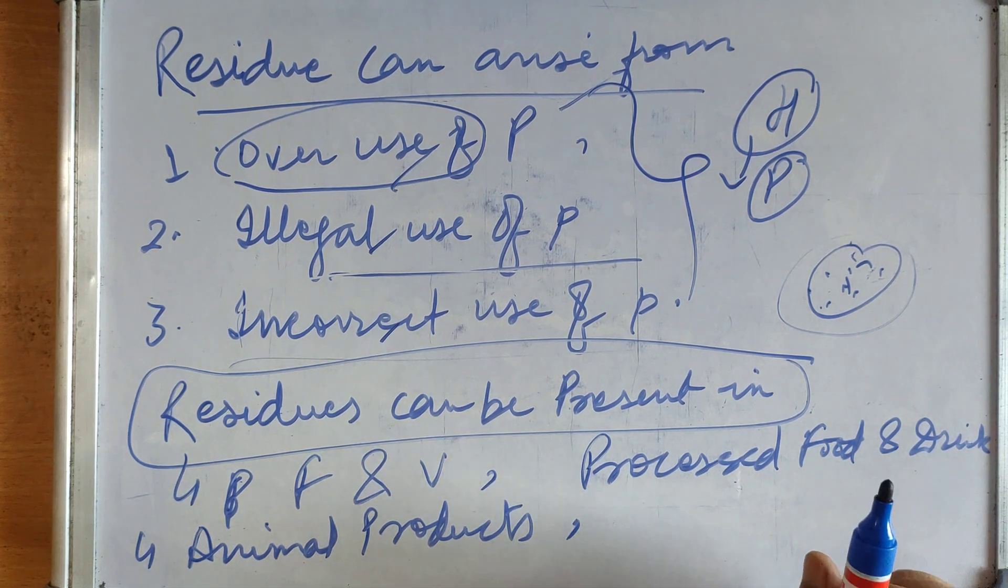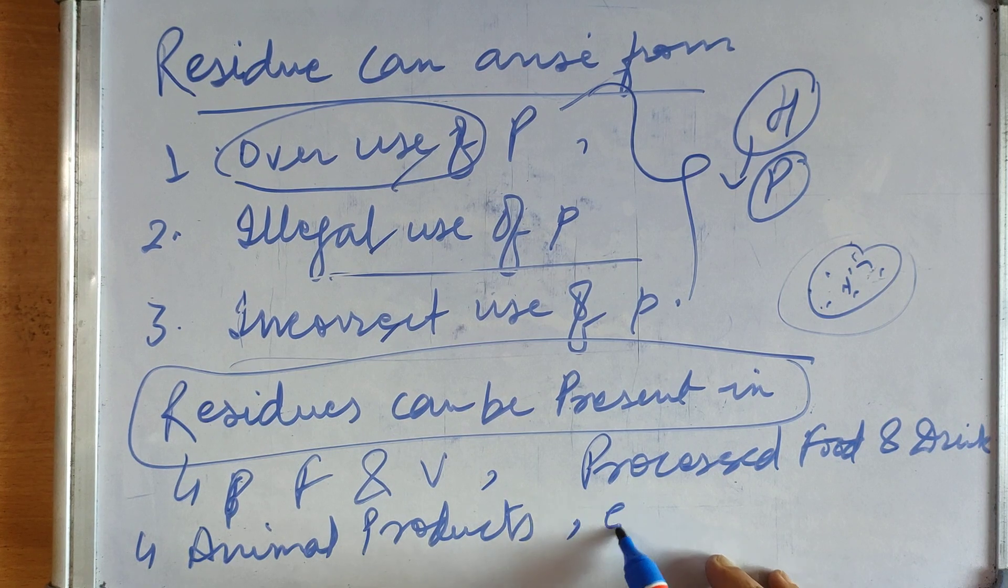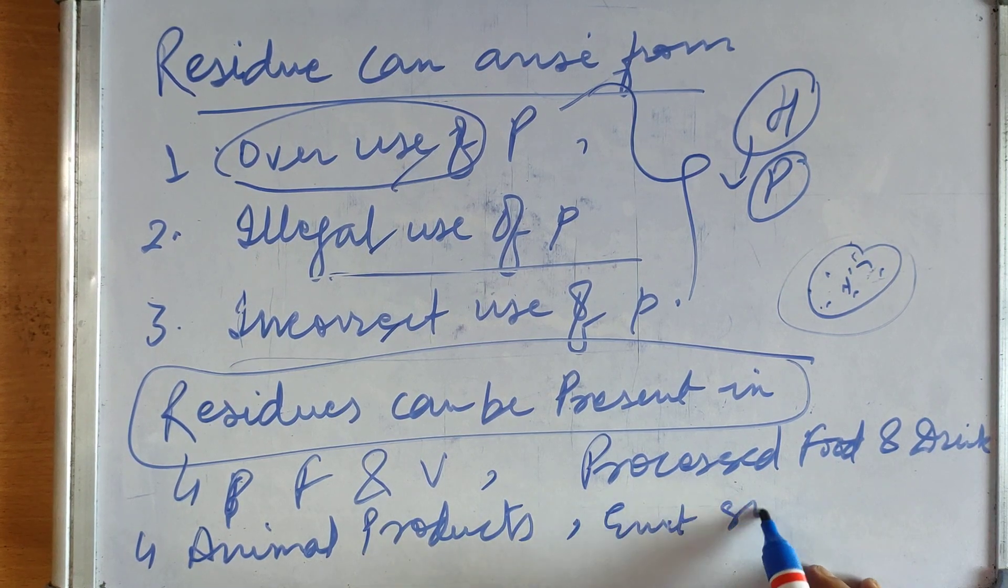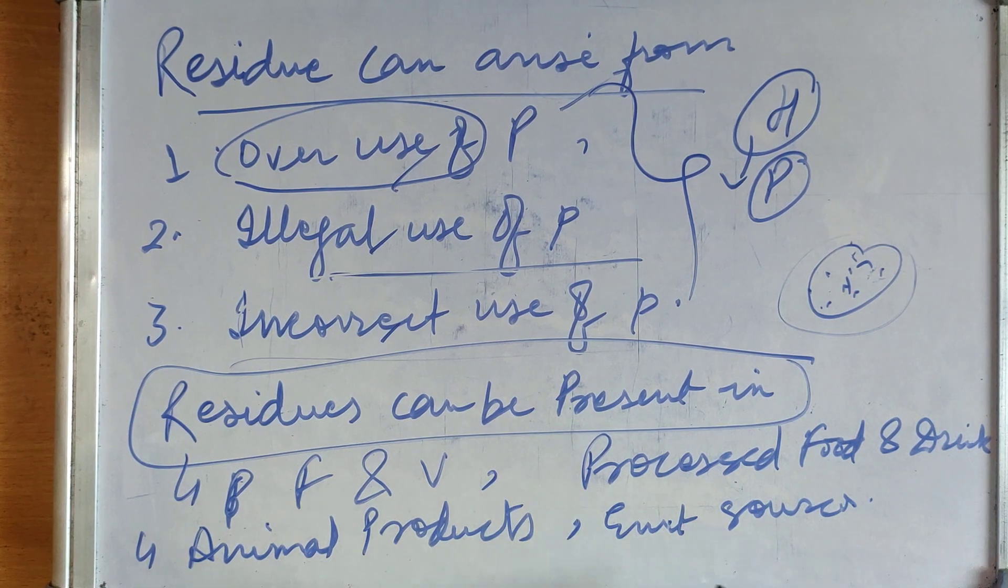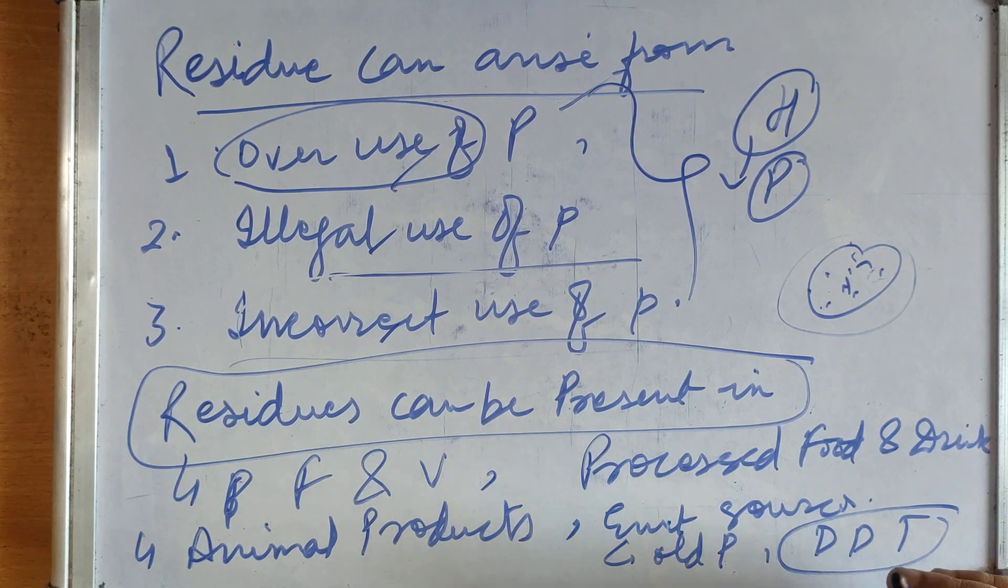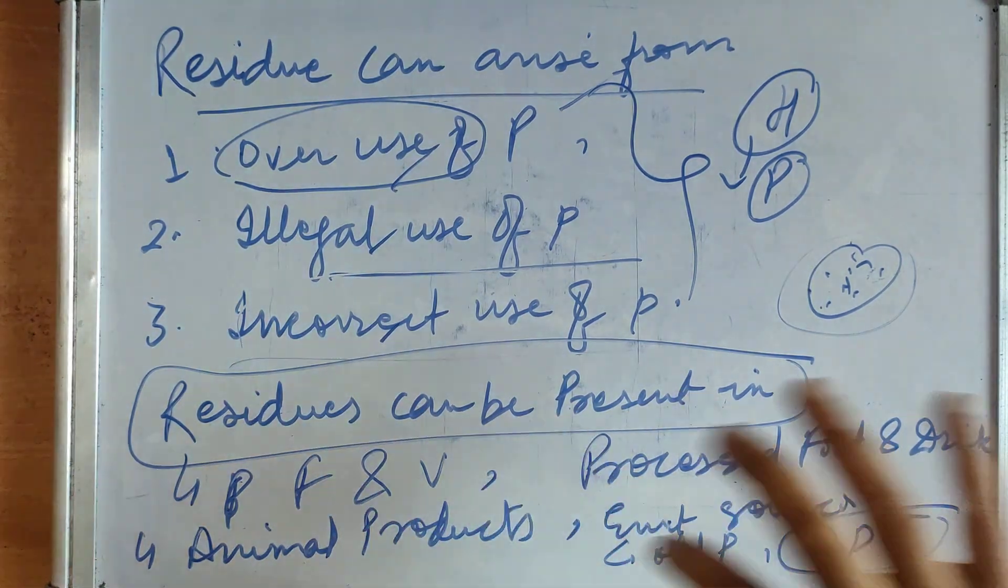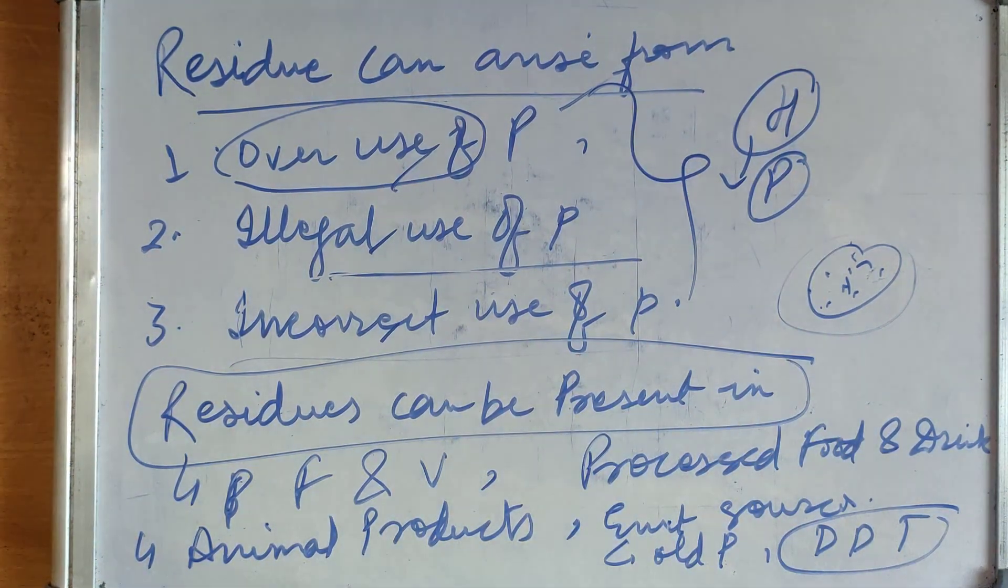Residues may also result from environmental and other indirect sources. There are environmental sources of residues also such as residues of old pesticides, DDT. These can survive in the environment for a long time. So these are the areas where residues can be present and from where we can take the residues.